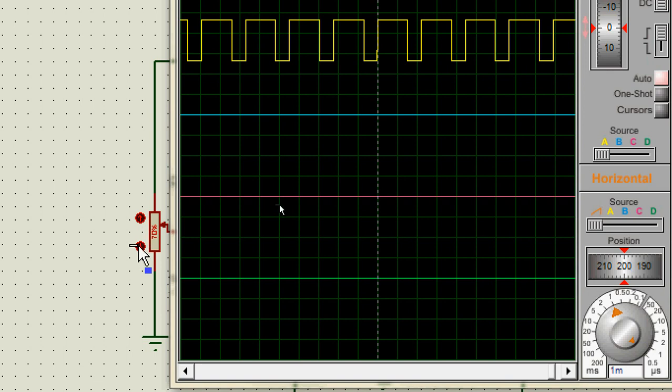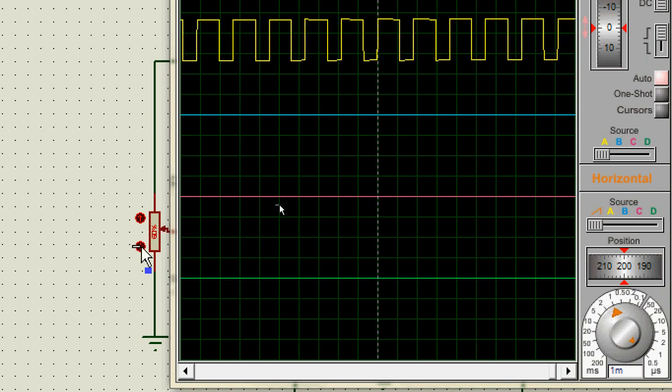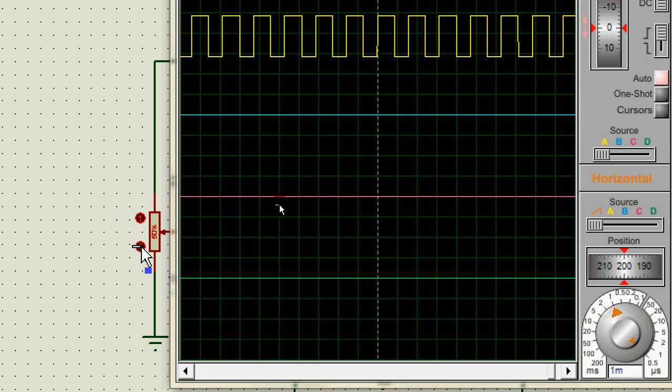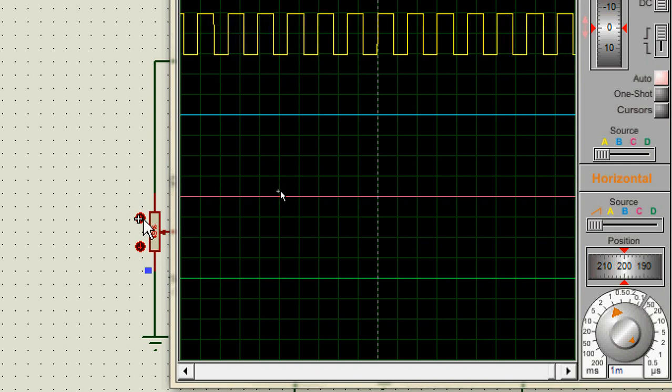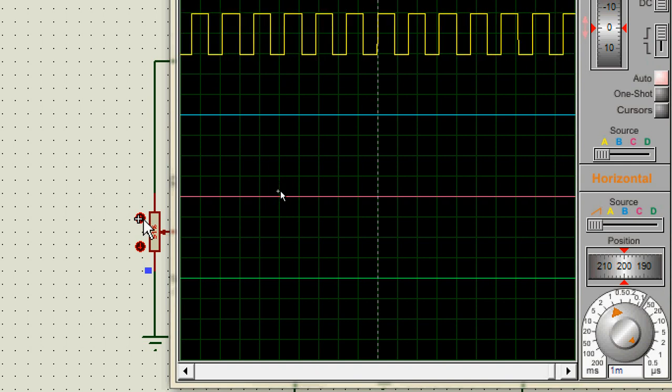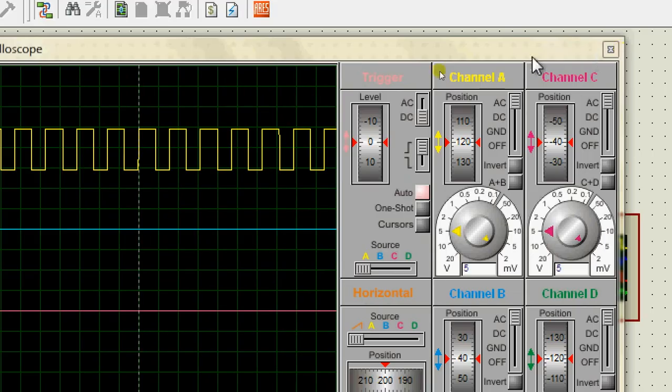As I increase the voltage, you can see the frequency reduces. This is because as I increase the voltage, the capacitor takes a longer time to charge and thus the frequency decreases. As I reduce the voltage, the frequency starts increasing.